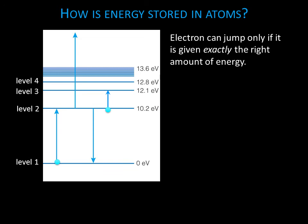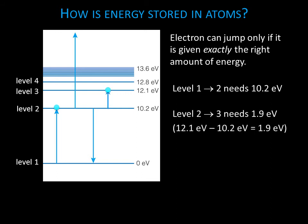The electron can jump only if it is given exactly the right amount of energy. To get the electron to jump from level 1 to level 2, 10.2 electron volts and only 10.2 electron volts will do it. Nine electron volts wouldn't be enough, and 11 electron volts would be too much. For the electron to go from level 2 to level 3, exactly 1.9 electron volts are what's needed.